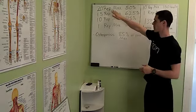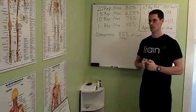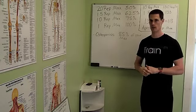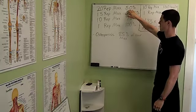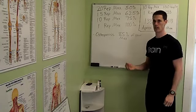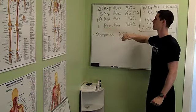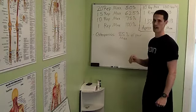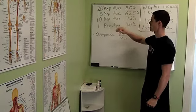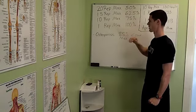So your 20 rep max—and when I say rep max, that means at 20 reps you cannot go beyond 20 reps, you max it out at 20 reps—that's 50% of your ultimate strength, and your ultimate strength is based off of your 1 rep max. Your 15 reps is about 62.5% of your 1 rep max. 10 reps is about 75% of your 1 rep max.